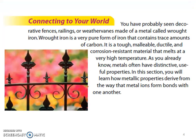You have probably seen decorative fences, railings, or weather vanes made of metal called wrought iron. Wrought iron is a very pure form of iron that contains trace amounts of carbon. It is a tough, malleable, ductile, and corrosion-resistant material that melts at a very high temperature. As you already know, metals often have distinctive, useful properties. In this section, you will learn how metallic properties derive from the way that metal ions form bonds with one another.